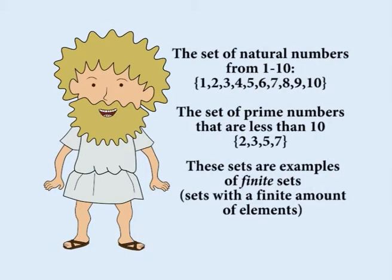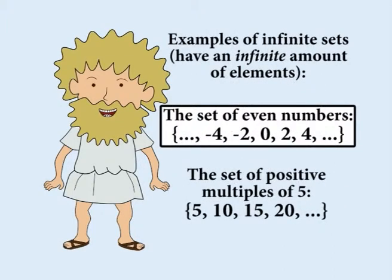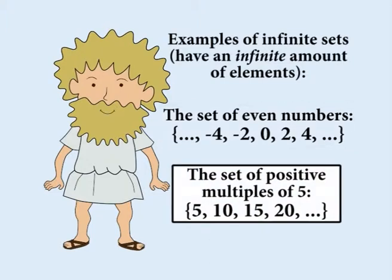Both of these sets have a finite amount of elements. However, you can also have sets with an infinite amount of elements. The set of even numbers is an infinite set. And the set of positive multiples of 5 is another infinite set.